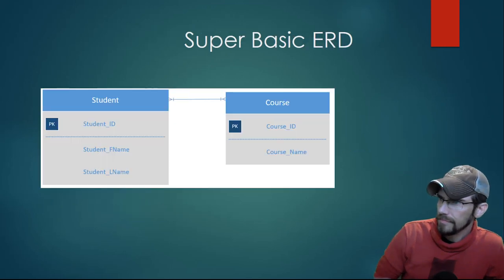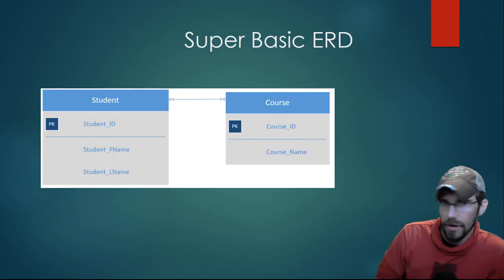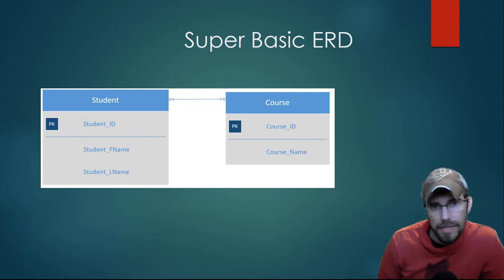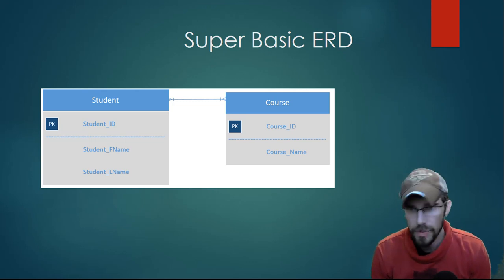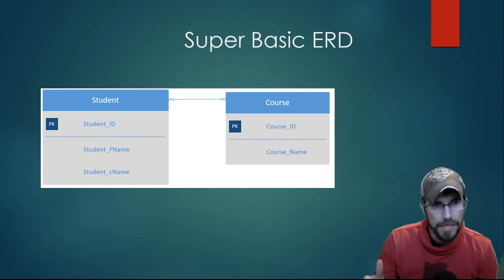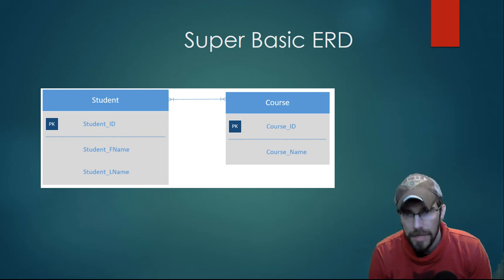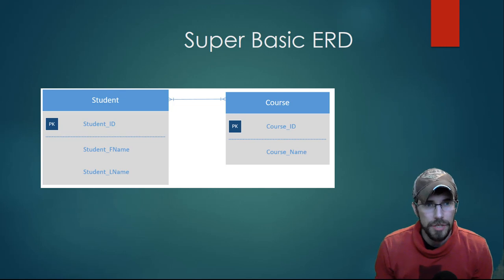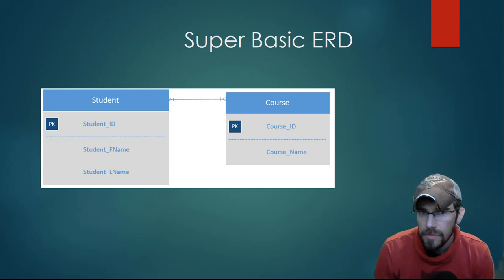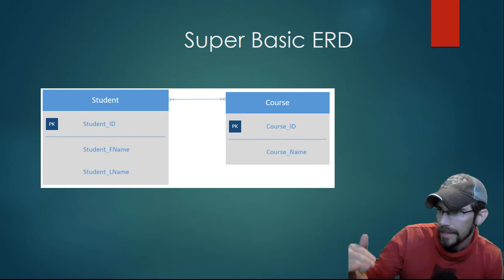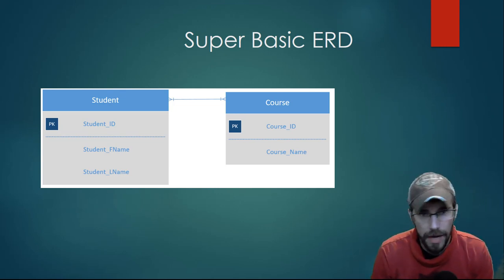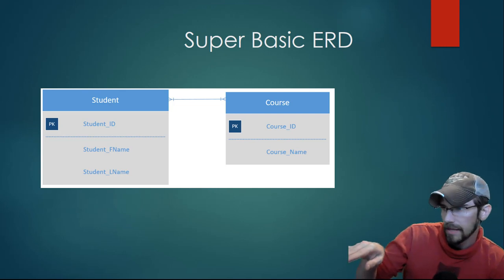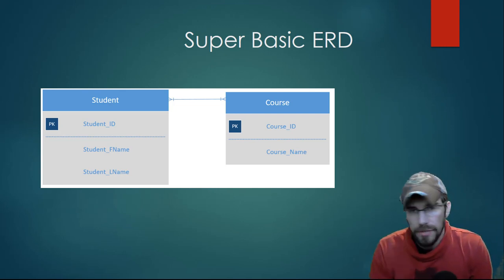Here's a super basic ERD. A school tracks what students it has, what courses are offered, and what students are taking what courses. This is a basic ERD between students and courses — a student can take many courses, and a course can have many students. Obviously, this is a many-to-many relationship. The diagram has all three elements: entities (student and course), attributes for each entity (like ID and name, though it could include contact info, credit hours, pre-reqs, etc.), and then the relationship between the two entities defined by the line connecting them with the many-to-many crow's foot notation.